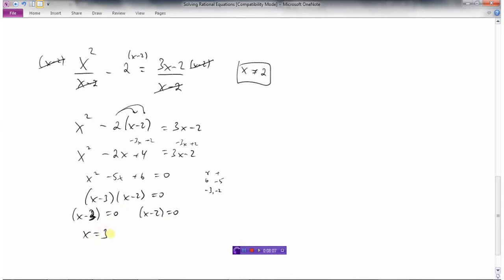So either x minus 3 is 0 or x minus 2 is 0. So then I get x equals 3 as this solution and x equals 2 as this solution. So now I'm going to take my two answers and check them. Or is this okay? No, it's not.